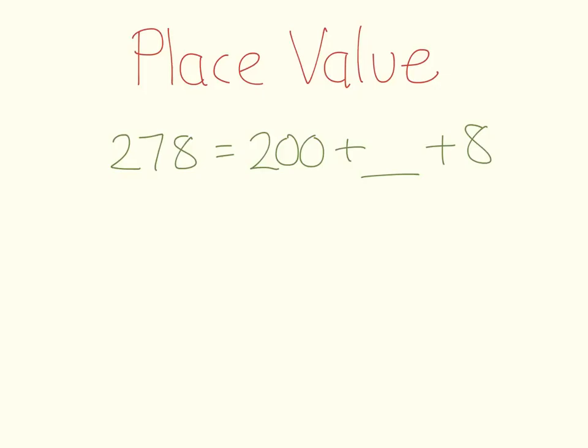In this question, it says 278 equals or is the same as 200 plus blank plus 8. There are two ways that you can work this one out. You can use your place value system. If you understand that this number is 278, you can see that on this side you already have the 200 and you already have the 8. So, therefore, the missing number must be the 70.